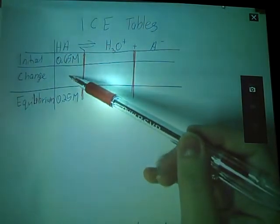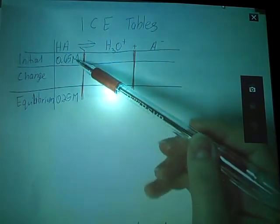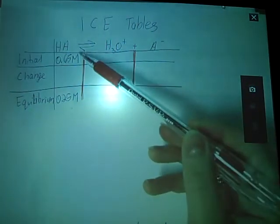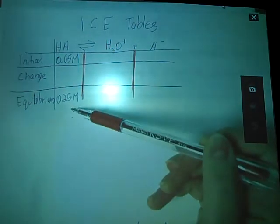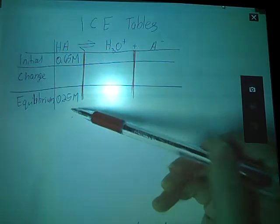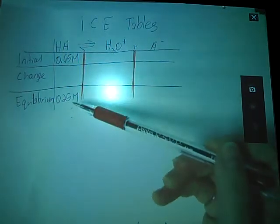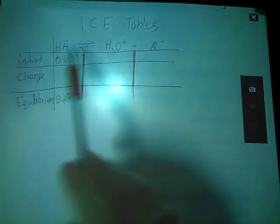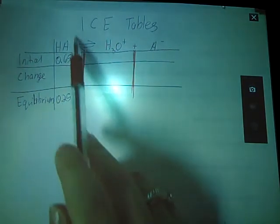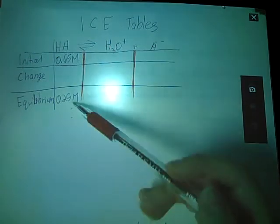But let's stop and think about what each of these little blanks means. Let's start here. Initial equilibrium. So we start here, we end here. How much did we change from here to here? Did my concentration go up or down? Well, if you think about your reaction, we're moving from reactants to products. So we would expect this number to go down, and indeed it does.